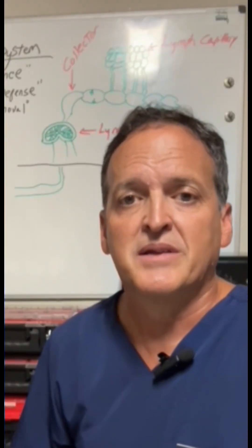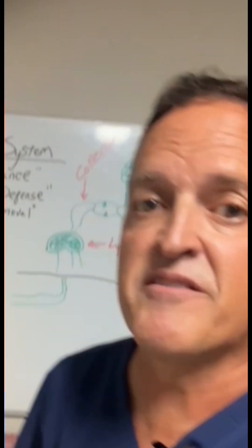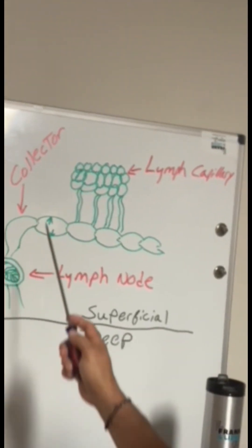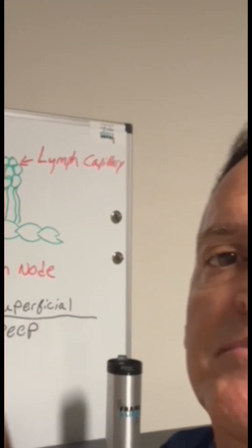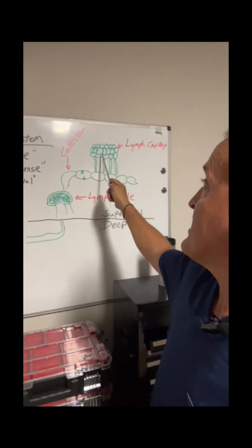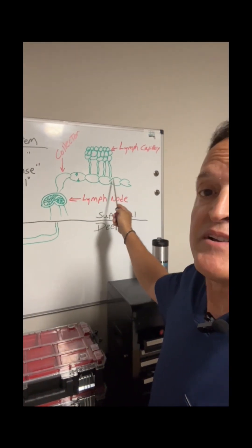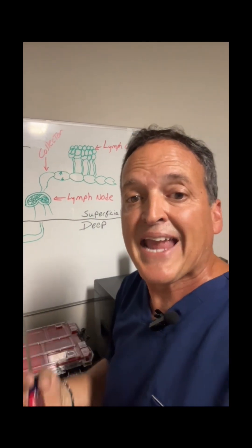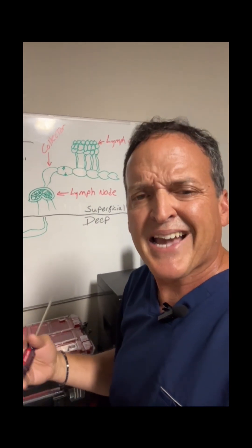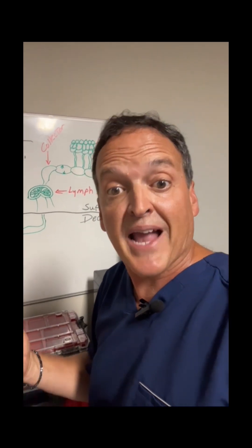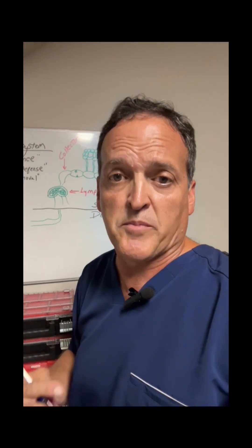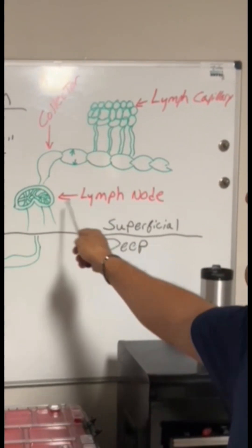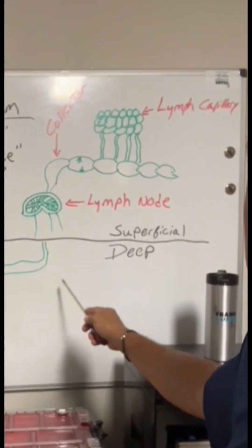The system includes lymphatic vessels. You have lymph capillaries, where fluid is absorbed from your tissue, down to the lymph collectors. The lymph collectors carry lymph to the lymph nodes. They resemble veins because they have valves, and in addition, there's smooth muscle innervated by the autonomic nervous system. There's a superficial and a deeper lymphatic system, and we typically treat the superficial system.